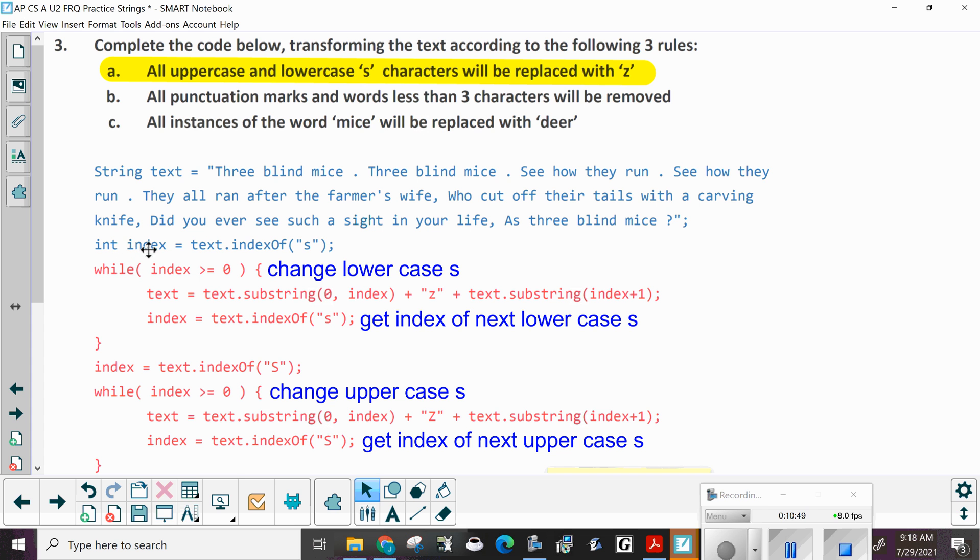Actually, the commas could be considered punctuation marks. We're going to say, get rid of all punctuation marks that are periods, question marks. Now, it starts out with int index is set to text dot index of S. So that's going to find the first S and return the index. So while the index is greater than or equal to zero, we're going to change the lowercase s. So text is set to text dot substring zero up to the index. So it's going to go up to, but it doesn't include that letter. Then it's going to replace that S with a Z. And then it's going to concatenate from index plus one to the end of the string. And then, index is set to text dot index of S. Again, you're going to get the index of the next S. And you're going to keep looping as long as index is greater than or equal to zero.